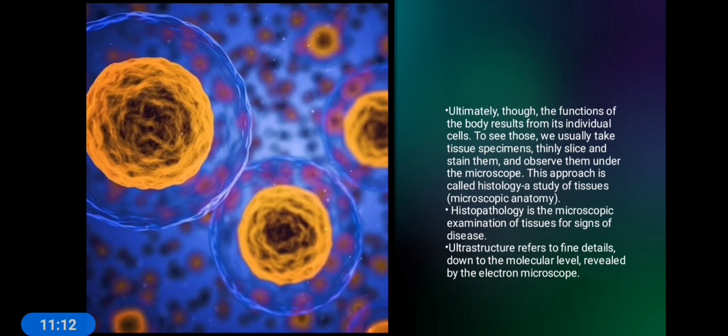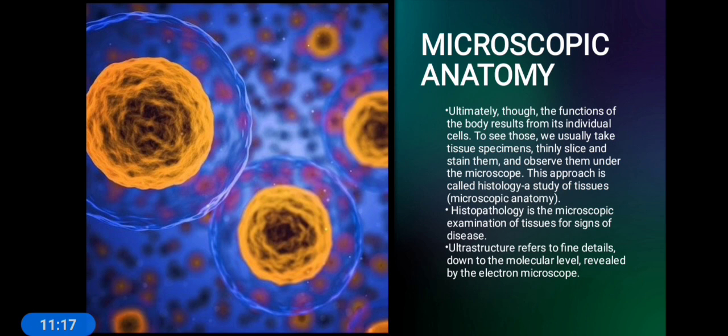Now let's talk about microscopic anatomy. You can see different types of cells and the cushion or fluid around them — these become microscopic anatomy. Ultimately the function of the body results from its individual cells, because the cell is the basic unit of the body. Cells make up the body by binding together. If any cell is not working, it may affect a little organ or even an entire organ.